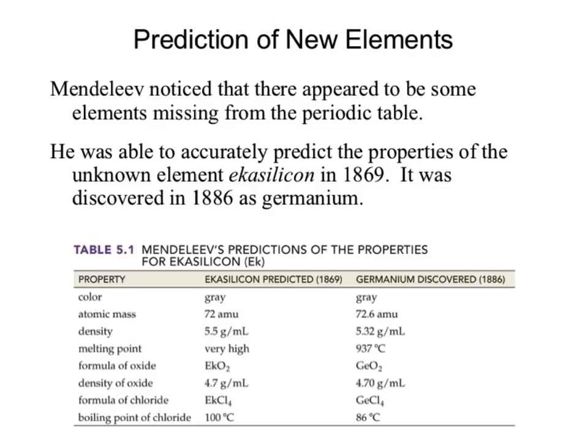How close are those predictions? Those are astonishingly close — roughly 20 years. Your lifetime, from when someone said this exists to somebody finding it and finding out it matched. That's a pretty impressive ability. That's the power of the periodic table: if we have the organization right, we have the ability to predict everything that can happen from it. That's why Mendeleev gets a lot of credit.